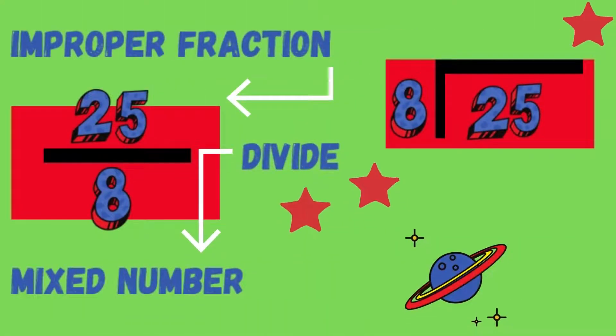To convert the improper fraction 25 over 8 into a mixed number, we will divide. Remember that the line in a fraction means divide. We start off by dividing 8 into 25, and 8 fits into 25 three times.